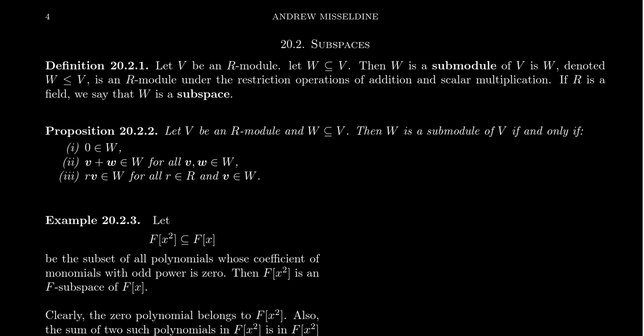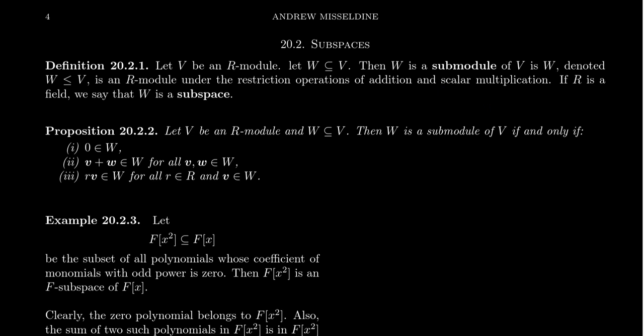Scalar multiplication is a function from R cross V into V. When we restrict it to R cross W, we need that the product is always in W as well, and that gives us a submodule. This is analogous to the notion of a subgroup or subring that we've talked about before.